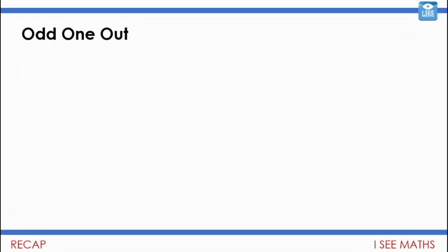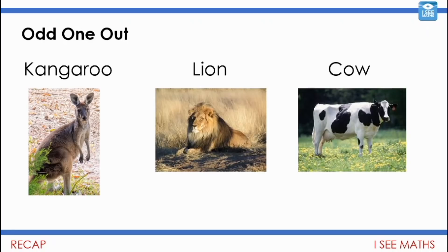So Odd One Out is just a brilliant game for looking at shapes and comparing their properties and seeing what's the same and what's different. We enjoyed introducing it yesterday, we're going to extend that theme today. And again to start out we're actually going to use animals: a kangaroo, a lion and a cow. So which one's the odd one out? Can you think of reasons why each one could be the odd one out? Pause the video and have a go.